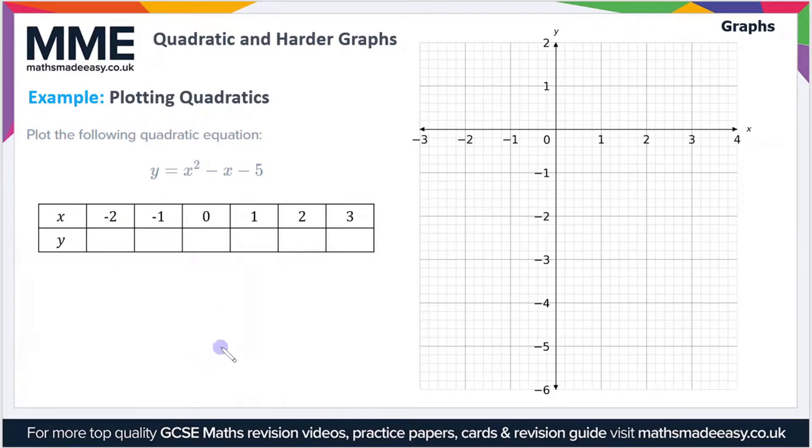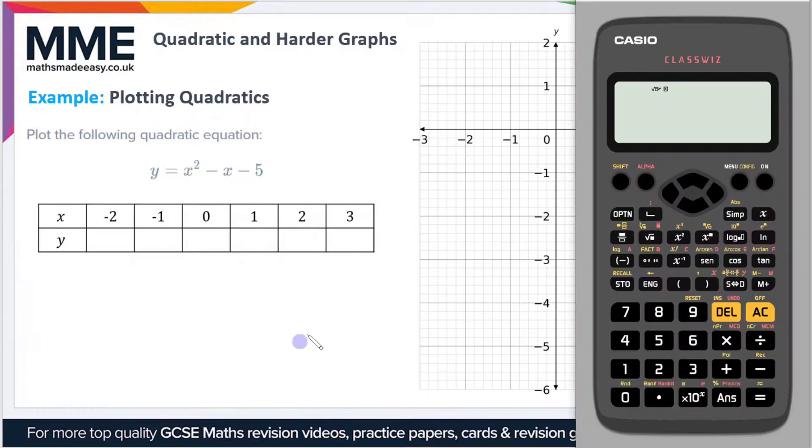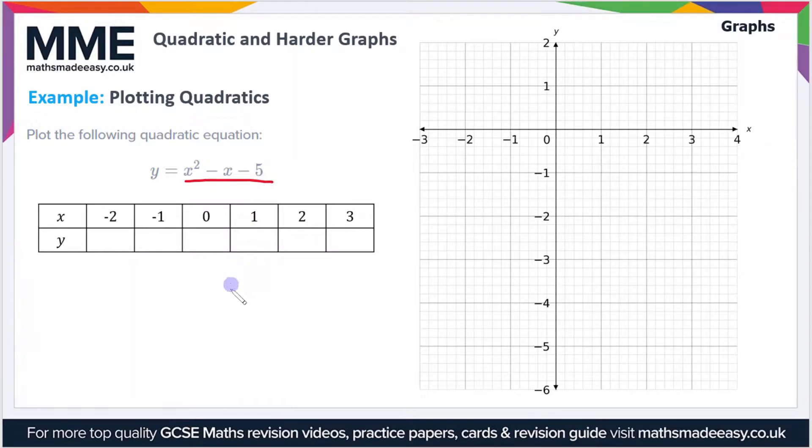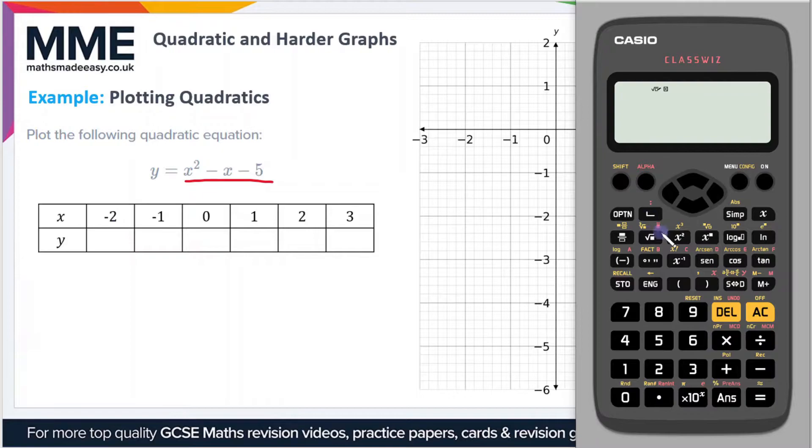Now the best way to do this is to use a calculator and just change the values as you go through one by one. So I'll show you what I mean. If I bring up my calculator here, now you can see that we have the equation x squared minus x minus 5, so let's use the first value of minus 2.